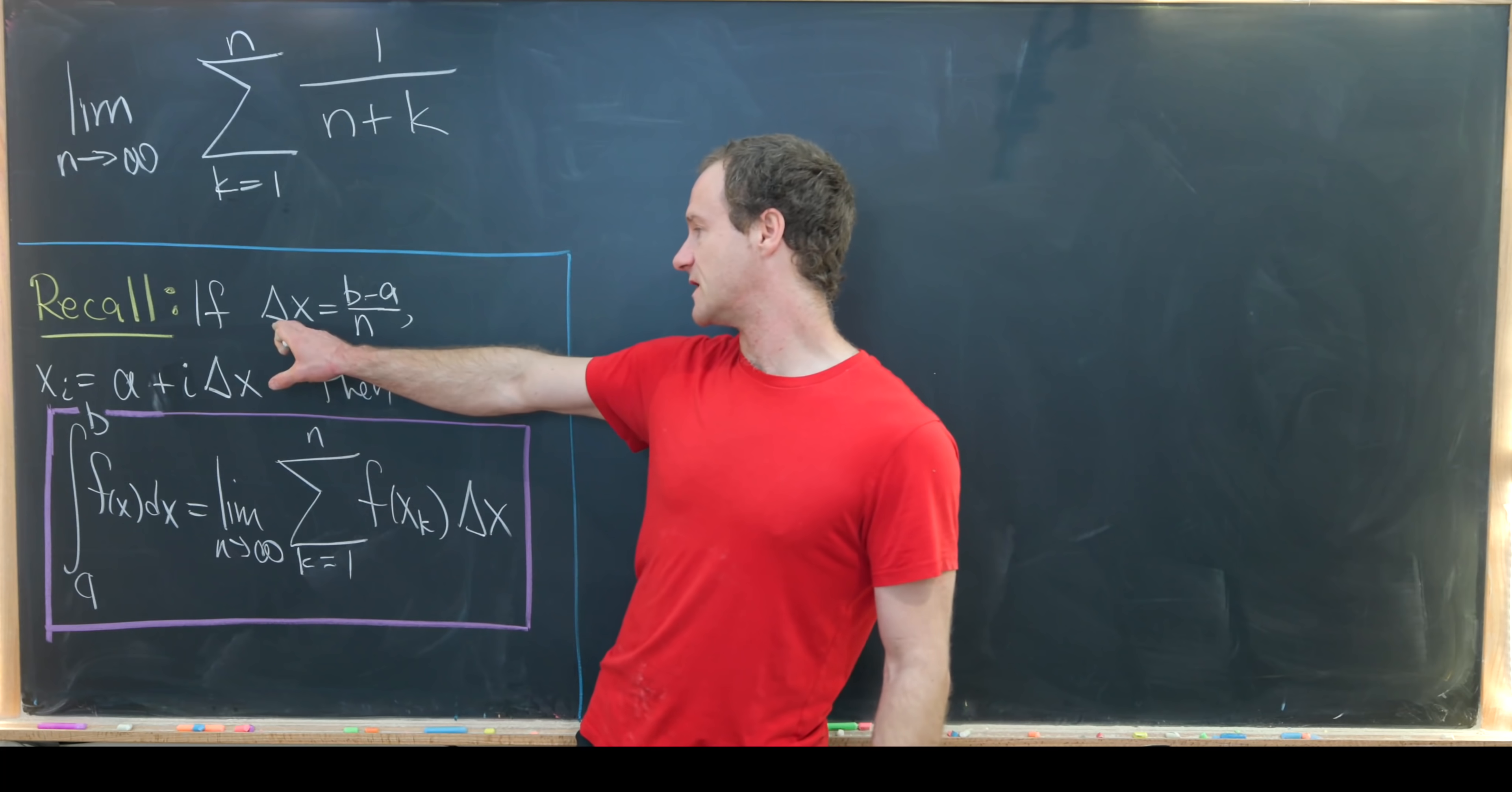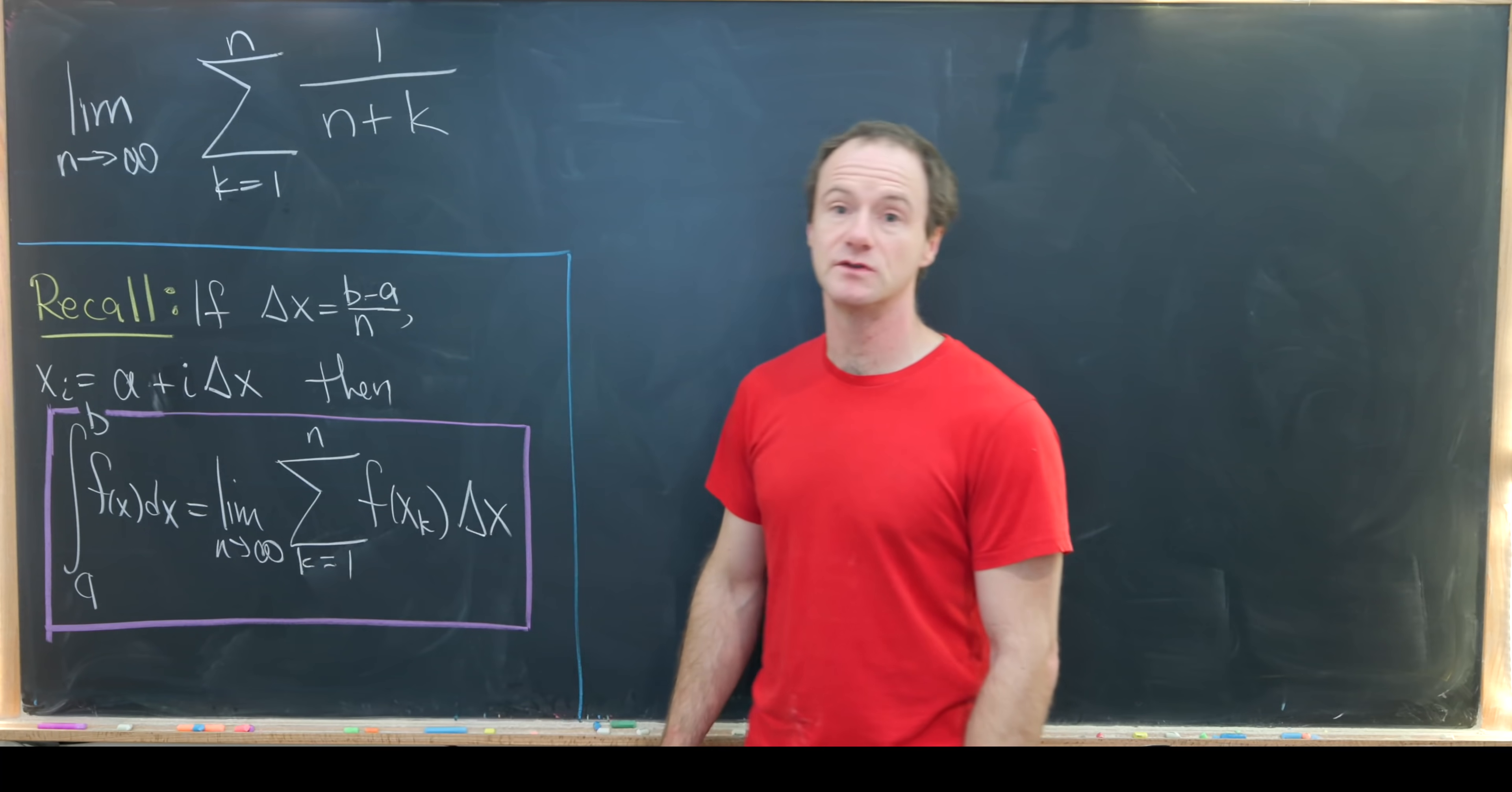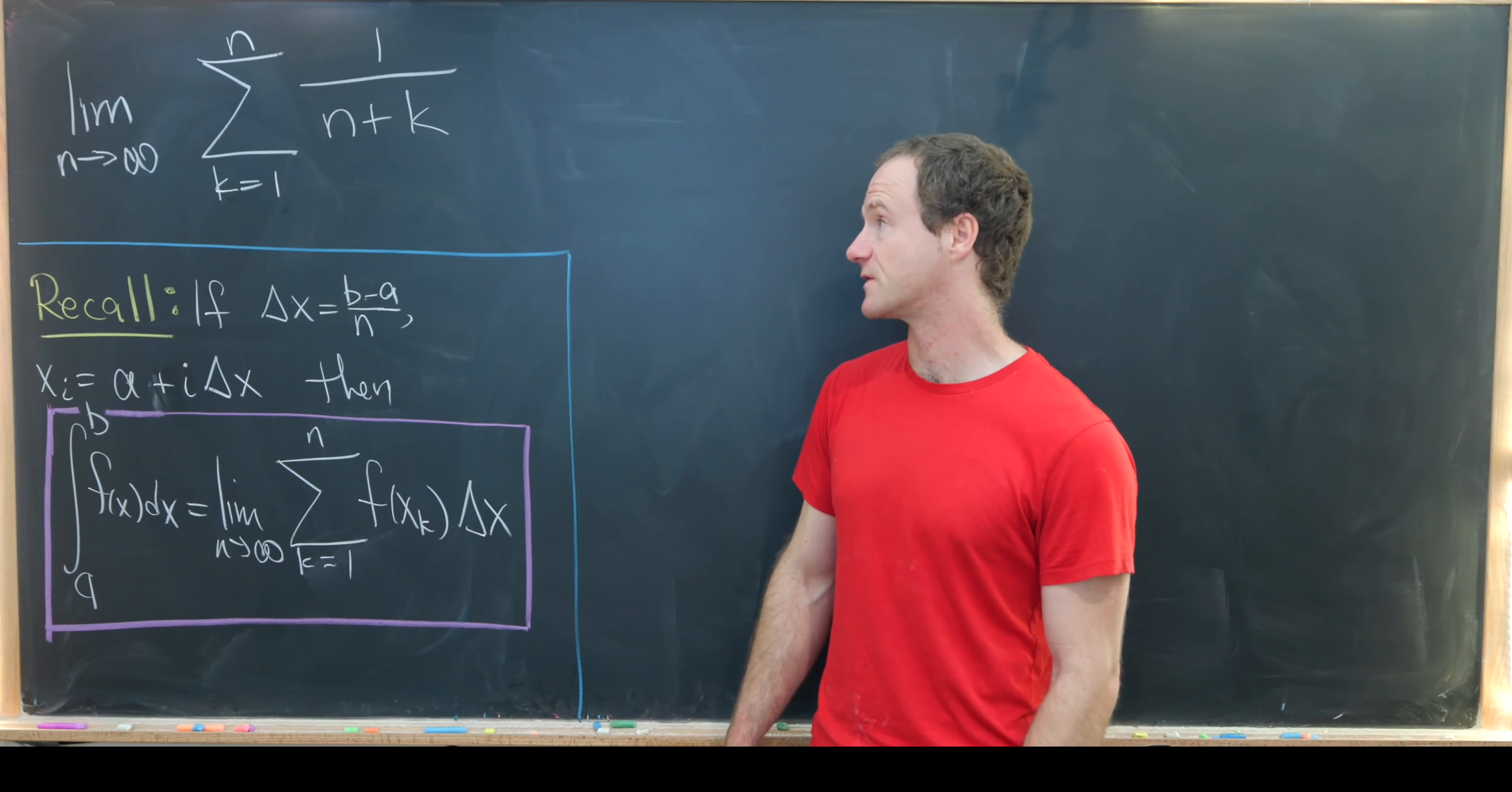If delta x is b minus a over n where a and b are real numbers, x_i is a plus i delta x, then the definite integral from a to b of f of x is equal to the limit as n goes to infinity of the sum as k goes from 1 to n of f evaluated at x_k delta x. I should probably point out that f needs to be well behaved on this interval a to b.